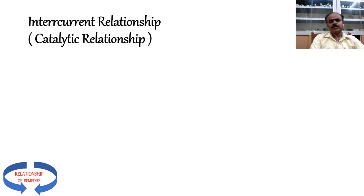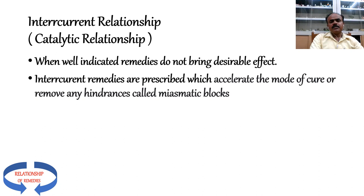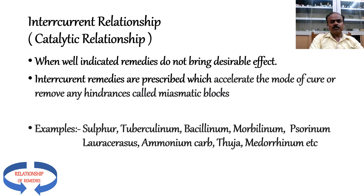Another very important relation is the intercurrent or catalytic relationship. When well-indicated remedies do not bring about the desirable effect—even after taking the totality and selecting what seems well-indicated—intercurrent remedies are prescribed to accelerate the mode of cure or remove hindrances called miasmatic blocks. Commonly used intercurrents include Sulphur, Tuberculinum, Bacillinum, Morbillinum, Psorinum, Lachesis, Ammonium Carb, Thuja, Medorrhinum, and others. We can come to know that a drug has done the work of an intercurrent only after it has completed its action.